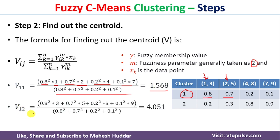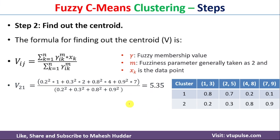Similarly, we calculate the second centroid, using its first and second components separately. Every time we use the probabilities corresponding to cluster 2 — that is 0.2, 0.3, and so on — rather than the cluster 1 probabilities. If you notice this equation, the probability is 0.2 and the first component is 1; the second probability is 0.3 and the component is 2. Solving gives 5.35 as the first component of the second centroid.